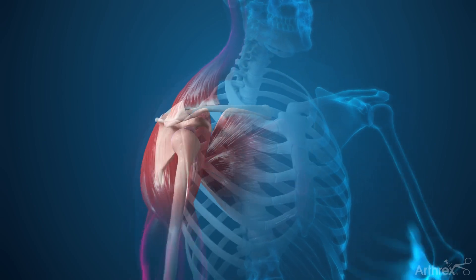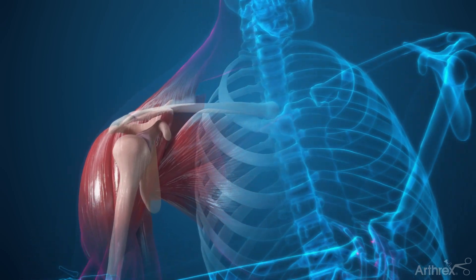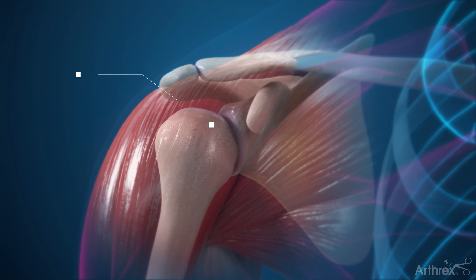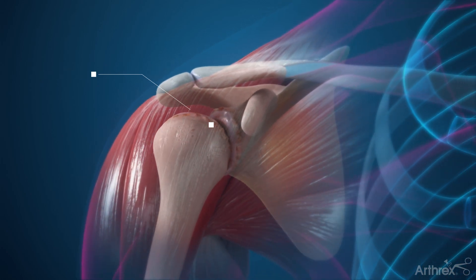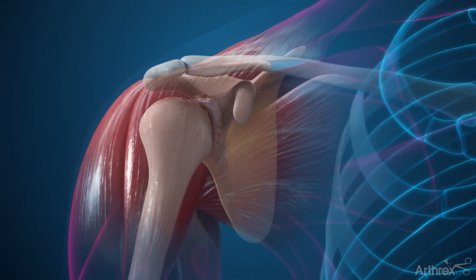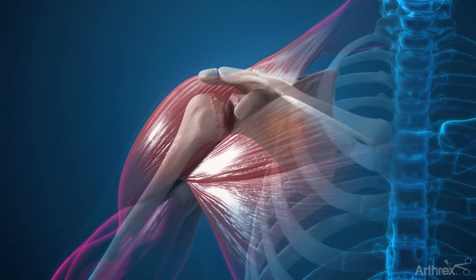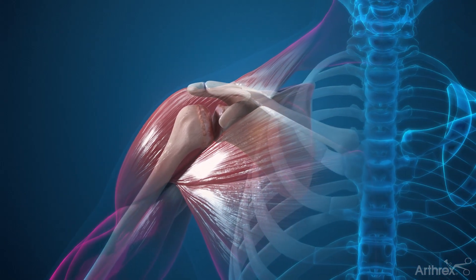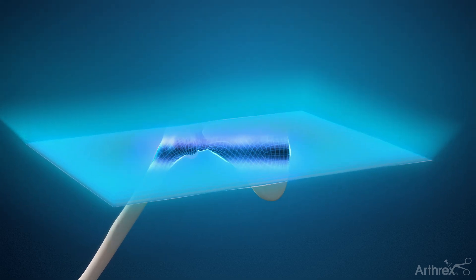Long-standing shoulder arthritis or rotator cuff failure can cause abnormalities within the ball and socket joint of your shoulder, leading to pain and weakness. If your surgeon determines you're a candidate for replacement, they may order a CT scan to determine the extent of wear and tear before proceeding with surgery.